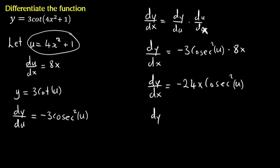So this means that our dy dx, dy dx will be equals to negative 24x cosec square, then where there's u we'll bring back 4x squared plus 1. So there we have it. This is the derivative of this particular function. Thank you.